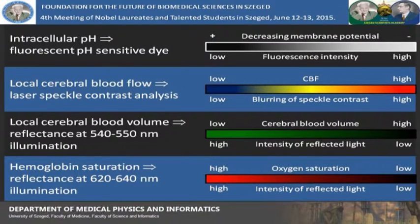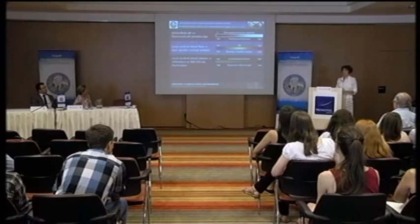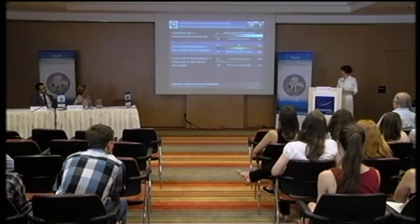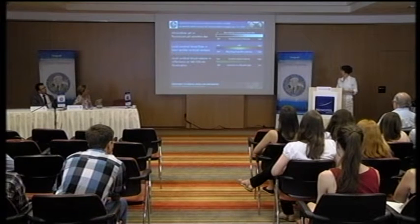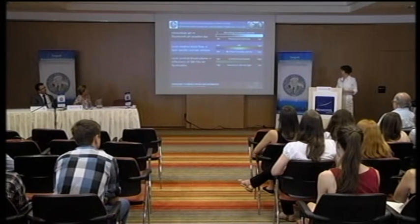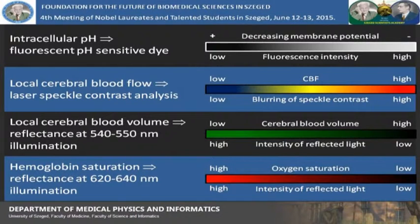We can also look at the volume of blood in the brain by illuminating the surface with green light. Green light is absorbed by blood, so if we have a low reflected light intensity, it means that we have high blood volume in the area investigated. Finally, we can look at hemoglobin saturation by imaging. For that, we illuminate the surface with red light, and the intensity of the reflected light correlates with the ratio of deoxygenated hemoglobin in the tissue.